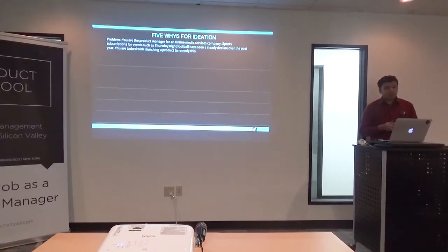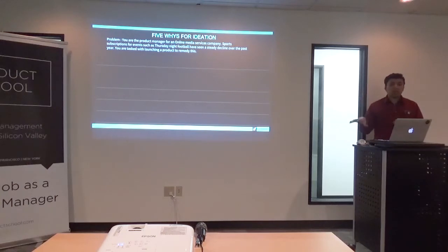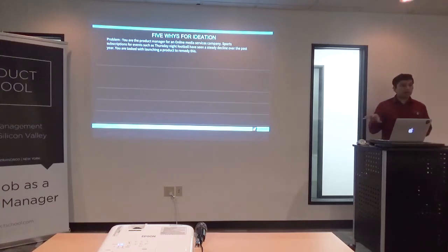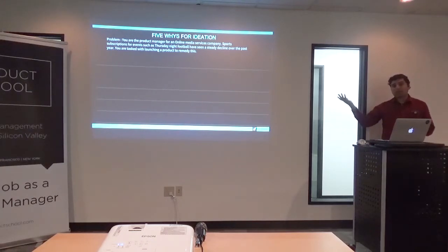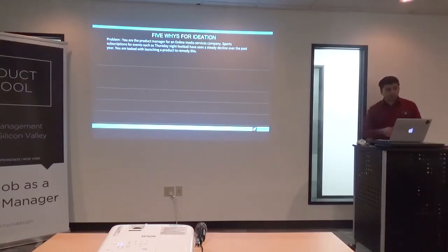You are the product manager for an online media services company — Comcast, Disney, or Netflix. You've noticed that sports subscriptions for events such as Thursday Night Football have seen a steady decline over the past year. You're tasked with launching a product to reverse this. You can't outright apply the reversal method here, because you know subscriptions have been falling, but you need additional information to find out where you can fix it. This is why the Five Whys fits very well for this case.